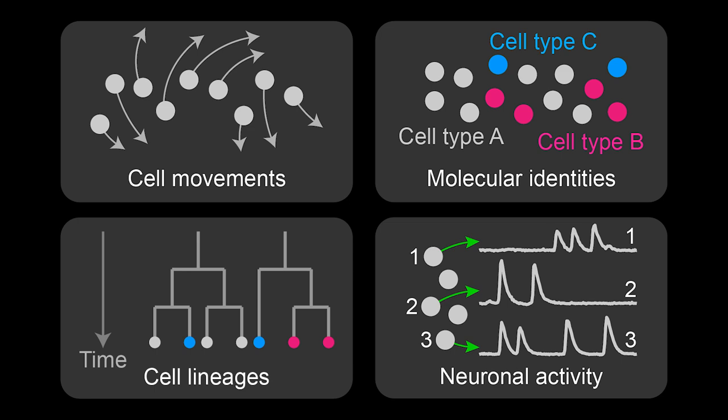This method allows us to continuously record the activity of all neurons in a developing circuit from the time the first neurons are born to the emergence of the coordinated circuit activity that instructs the animal's behavior.